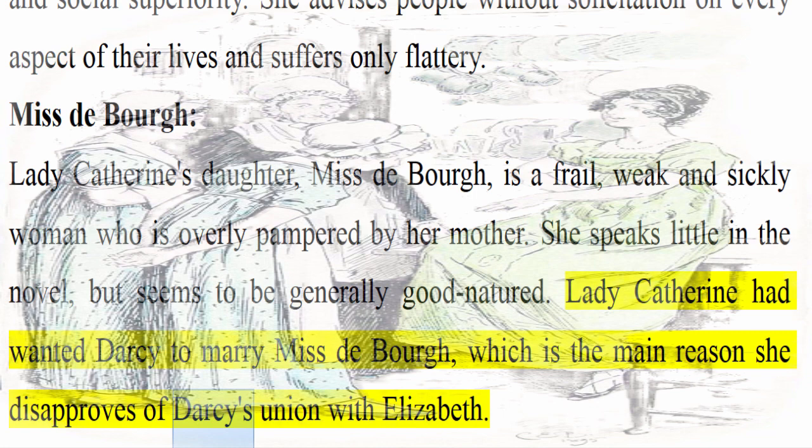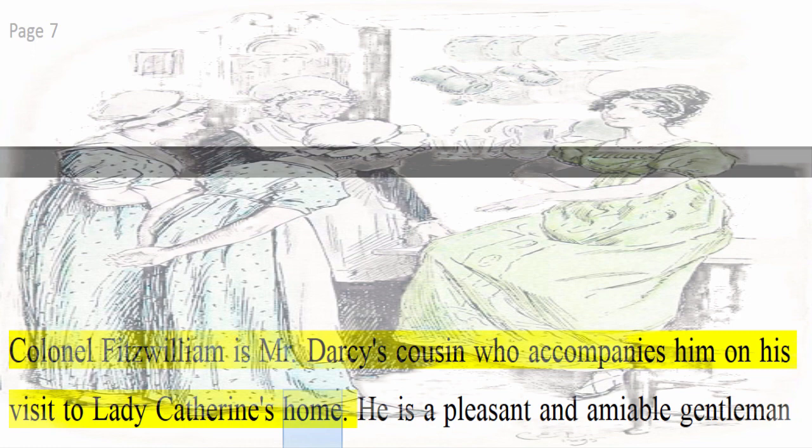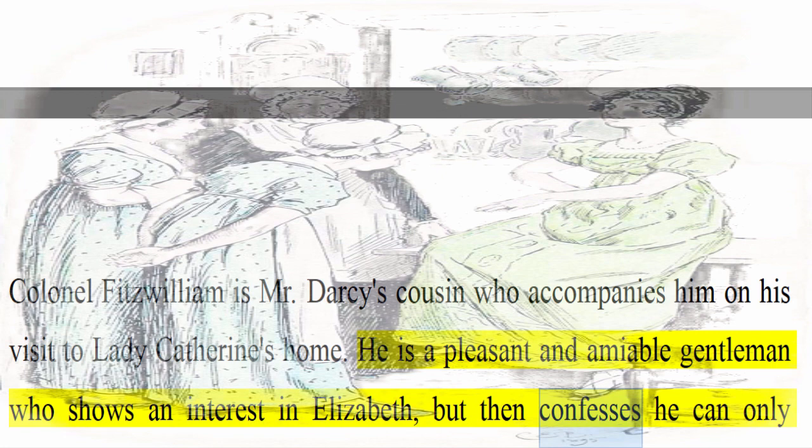Colonel Fitzwilliam: Colonel Fitzwilliam is Mr. Darcy's cousin who accompanies him on his visit to Lady Catherine's home. He is a pleasant and amiable gentleman who shows an interest in Elizabeth, but then confesses he can only marry someone with a large fortune because of his status as a youngest son.